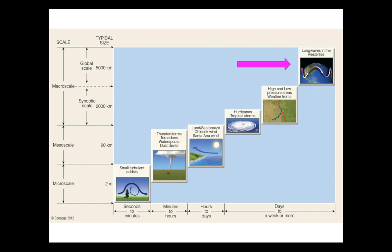There are other scales of flow in the atmosphere. Microscale flows occur over a few minutes and are typically short-lived, kind of like smoke from a chimney. Mesoscale flows occur over a few kilometers up to about 100 kilometers, including things like sea breezes, thunderstorms, and small tropical systems. This is what we're going to be talking about today.